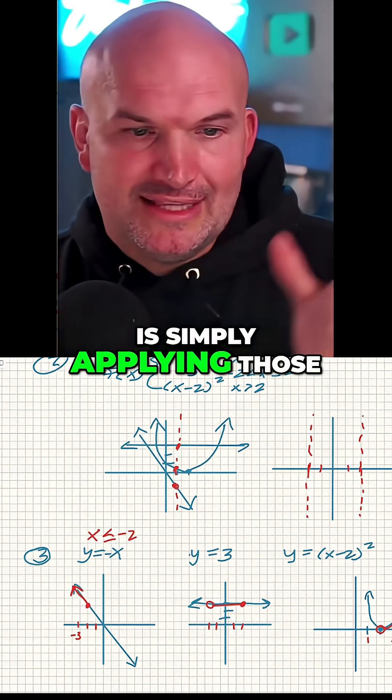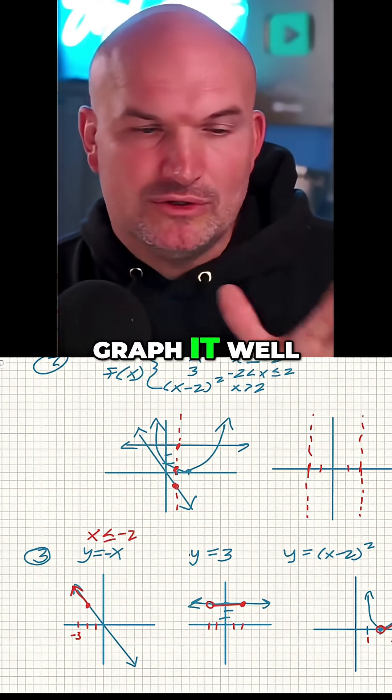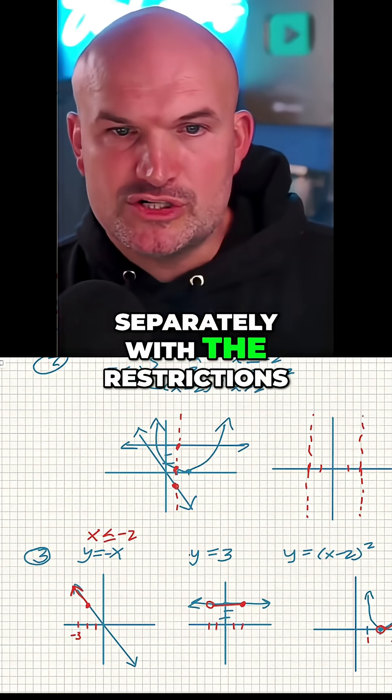So tip number three is simply applying those restrictions and now just graphic. You graph them separately with the restrictions. So let's go ahead and see what the difference is.